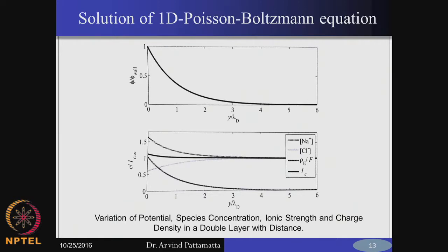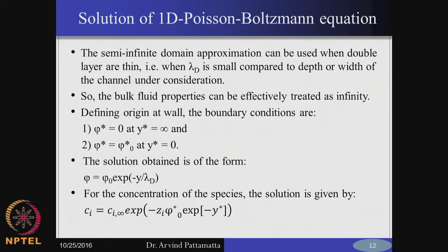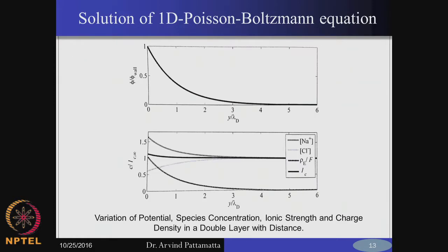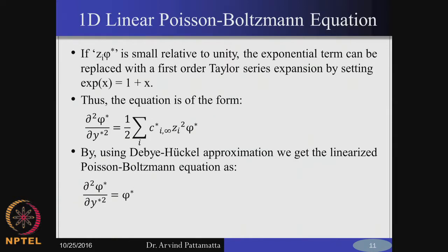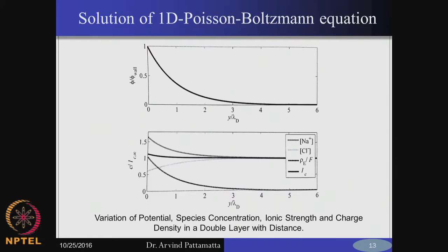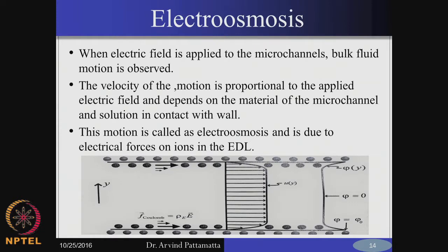Similarly, with the concentration profile — for example, the Na+ concentration will be very high right at the wall because of the negatively charged wall, whereas the Cl- concentration will be very low compared to the bulk values. These two show the Boltzmann type distribution and exponential decay from the wall to the bulk values. Now we have the solution for phi and know how phi varies with respect to y, and we can also find out the case where we apply an electric field. So far we have not applied an electric field; everything was statics — we just solved for the static field.